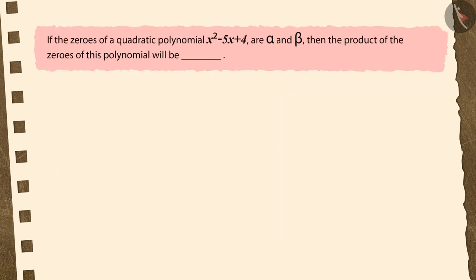Let us now see one more question. If the zeros of a quadratic polynomial x squared minus 5x plus 4 are alpha and beta, then what is the product of the zeros of this polynomial? Options: 5, minus 5, minus 4, or 4. To solve this question, pause the video and then match your answer.